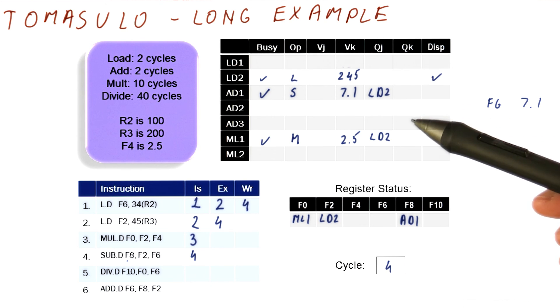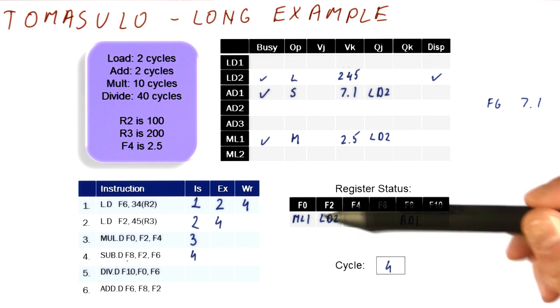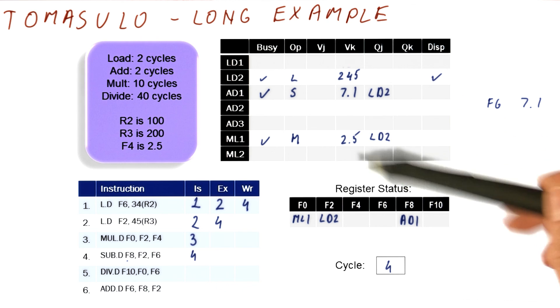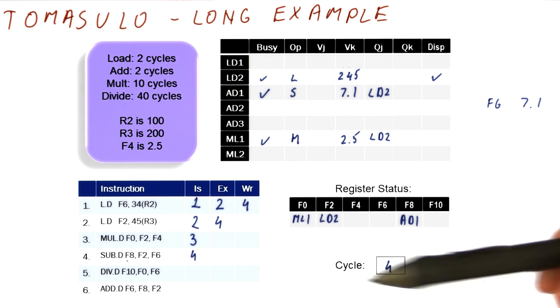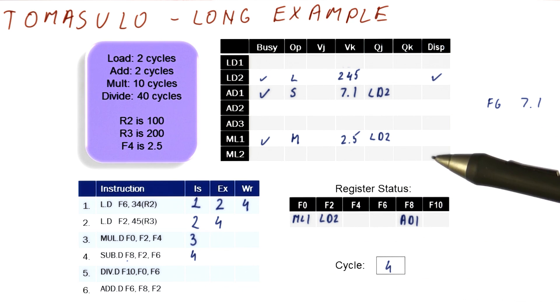Now in this cycle, in cycle four, we have issued an instruction. We have tried to dispatch an instruction, and we found that only the load really can be dispatched. And we have written our result back. Only one result can be written per cycle anyway. So that's it for this cycle. So let's move on to cycle five.